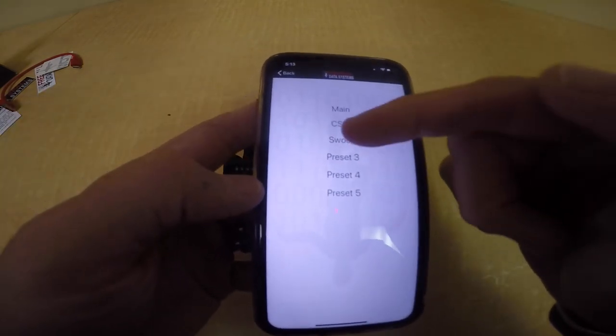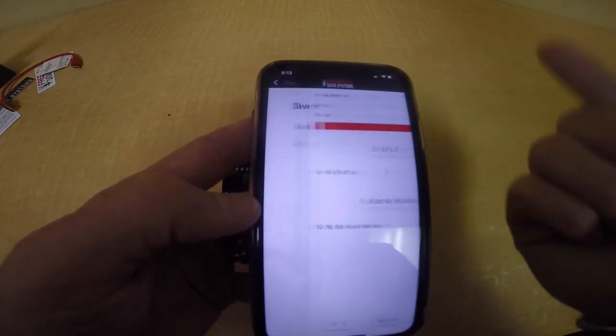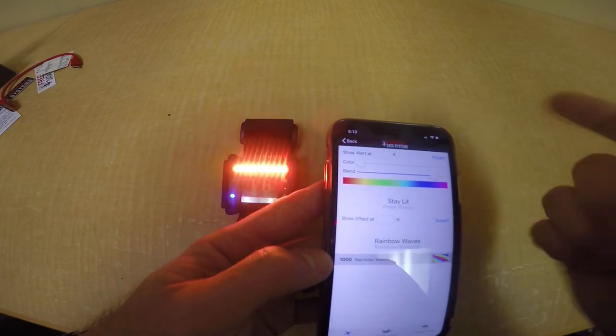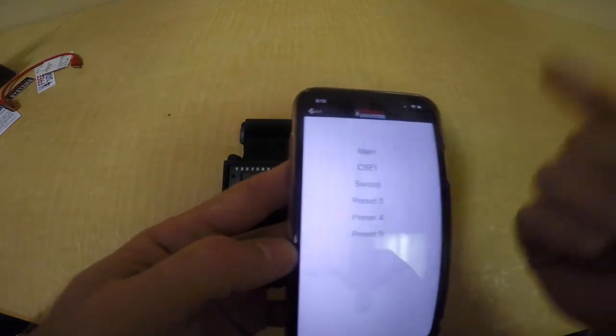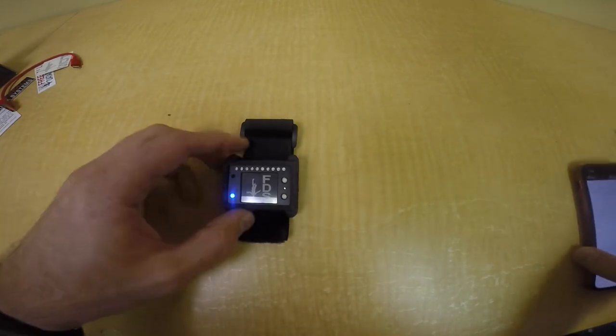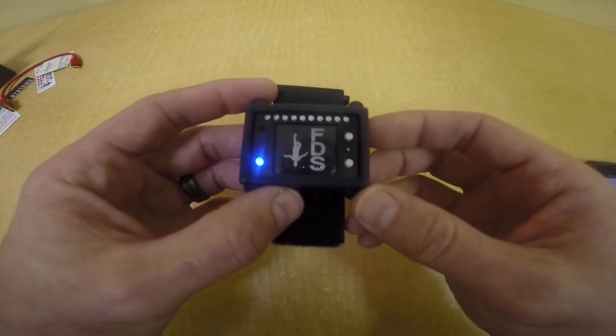So basically that's a general idea of how you set it up. And then you can select your different presets, like what do you want it to do at this altitude, that altitude. So yeah, it's really easy to use, really user-friendly, which is super good. I'll throw it on the wrist so you can see how it looks real quick.